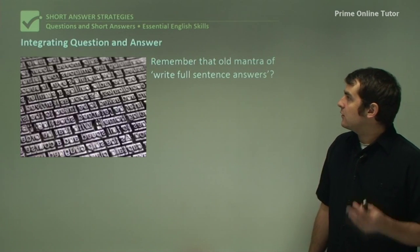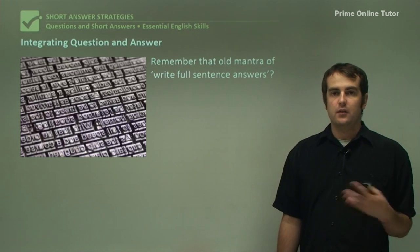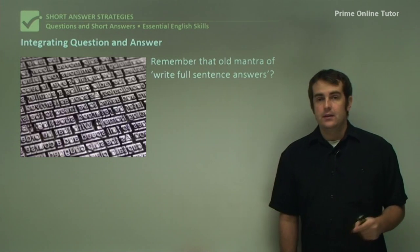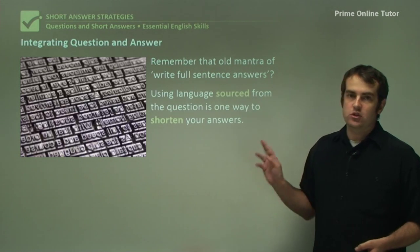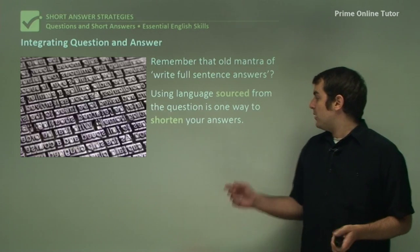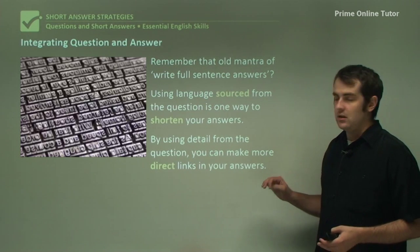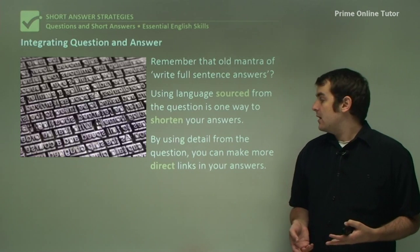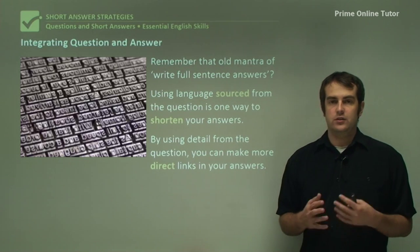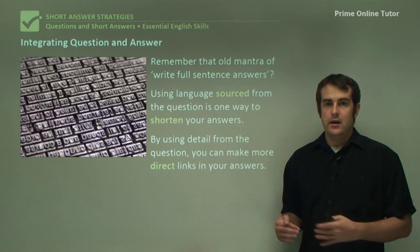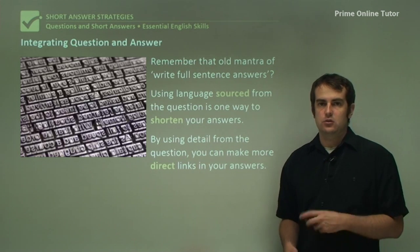First, let's look at integrating question and answer. It's essentially that old mantra you've had drilled into you — full sentence answers when doing comprehension, probably in primary school. But it actually involves a little bit more than that. Using language sourced from the question is one way to shorten your answers, because by using the language and detail from the question, you're making your answer a lot more direct. Whatever you discuss and write is going to be pointing directly at words in the question and will be very specific to the meaning you're trying to get across.